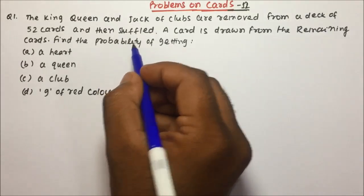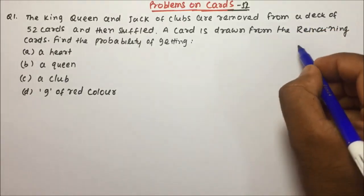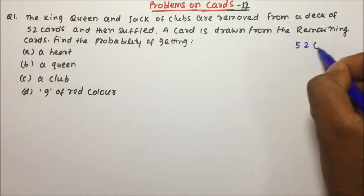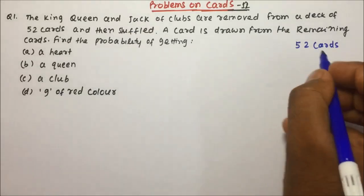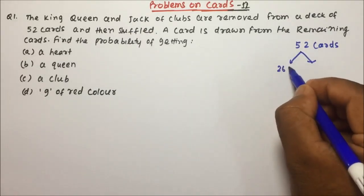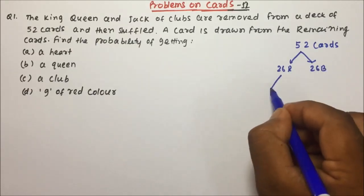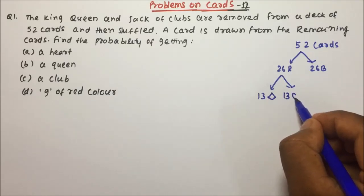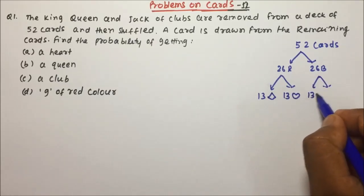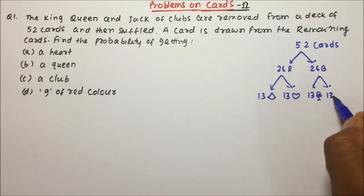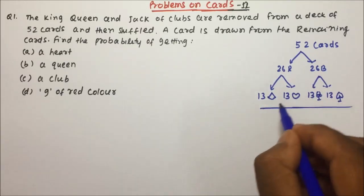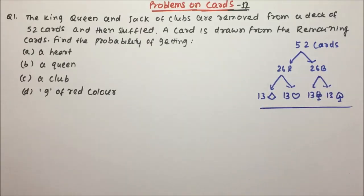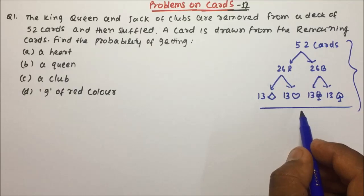The king, queen and jack of clubs are removed from a deck of 52 cards. The total number of cards is 52 — 26 will be red and 26 will be black. In the 26 red, there are 13 diamond and 13 heart. In the 26 black, there are 13 club and 13 spade. I have discussed this in previous videos. Total cards = 52, distributed like this.